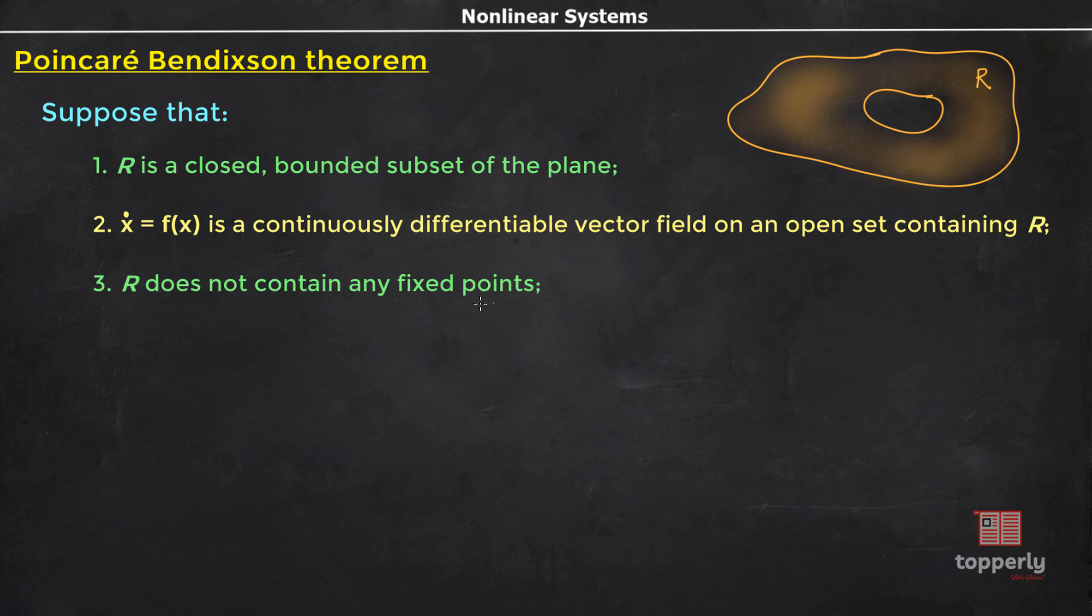Fixed points as in equilibrium points. This is the reason why R has an annular shape, because limit cycles exist around equilibrium points. For a limit cycle to exist in R, there should be an equilibrium point in this region. Let this point be the equilibrium point P. But we can't have the equilibrium point in region R. Hence, R is chosen in such a shape that the equilibrium point is avoided.